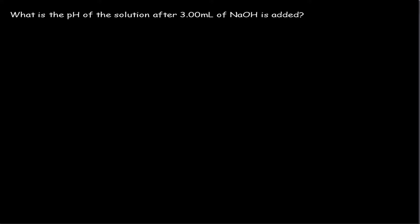Let's look at the next question. The question is: what is the pH of the solution after adding 3 milliliters of sodium hydroxide? The first thing I'd like to do is calculate the moles of sodium hydroxide added, and the moles of HCl that was in the flask initially. So let's look at the moles of NaOH that we're adding.